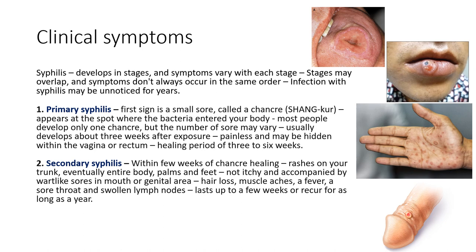Within a few weeks of chancre healing, secondary syphilis symptoms start to appear. They are characterized by rashes on the trunk — the chest and abdomen — eventually spreading to the entire body, palms, and feet, with no itchiness. They are also accompanied by wart-like sores in the mouth and genital area. As seen in the diagrams, there are more significant dermatological disruptions occurring on the body. This stage lasts for a few weeks and can also recur after a year or so.